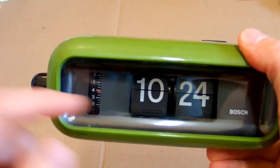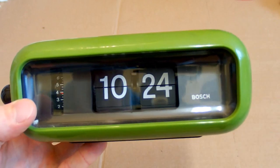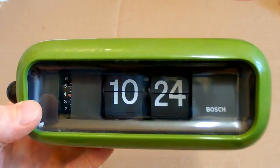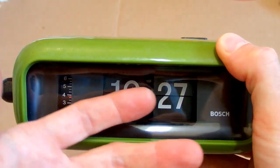So today let's take a look at an interesting digital mechanical clock. It's antique from about the 70s, made by Bosch, and it has a display which is digital but it's not a normal LED display or any other type of electronic display.